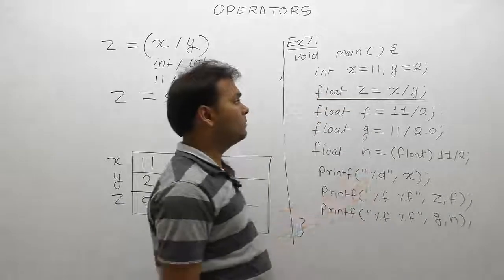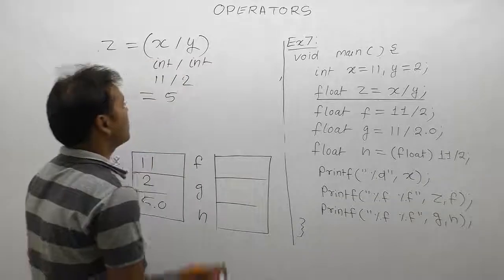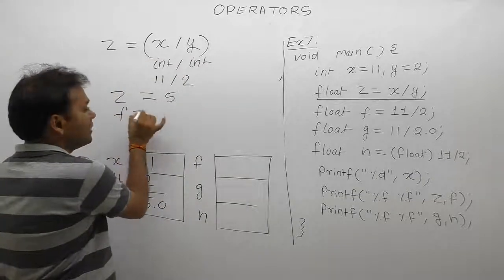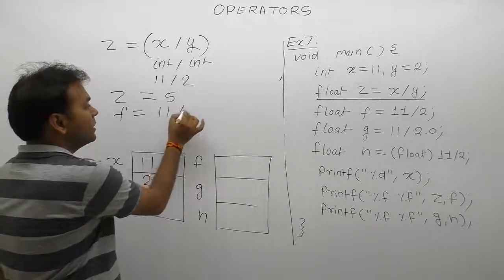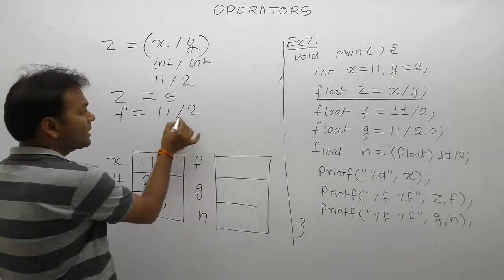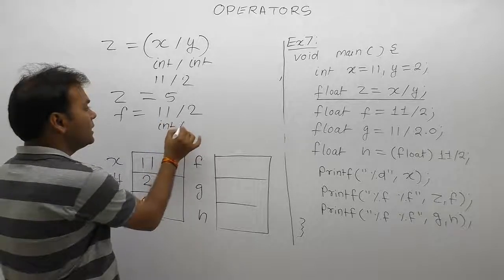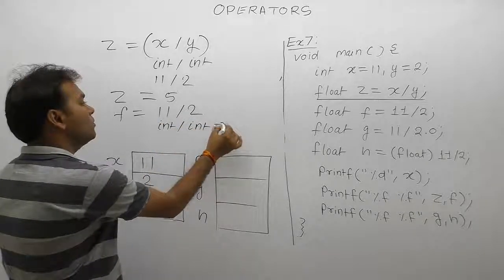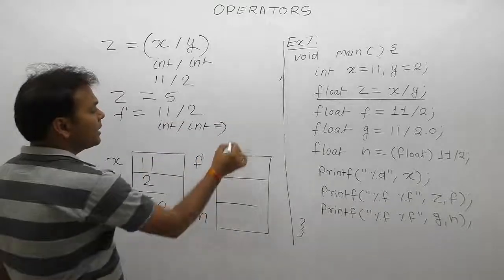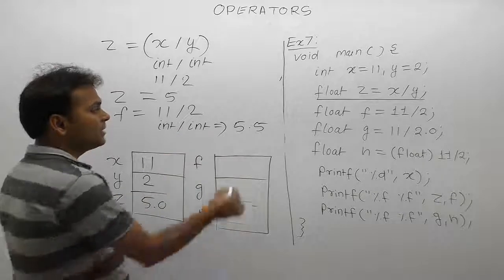For the next expression, f equals to 11 divided by 2. With assignment, highest priority goes to division first. The first operand 11 has type integer, and 2 also has type integer, therefore the result is also integer. From 5.5, when operand type is integer, only the integer part is considered—the decimal is discarded. Five is then assigned to f.